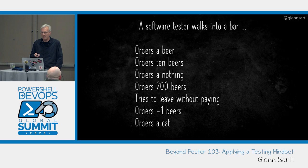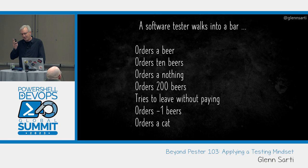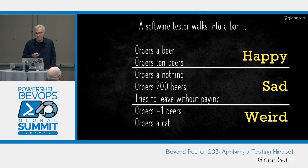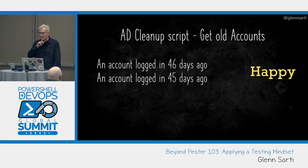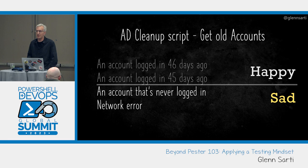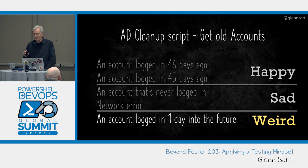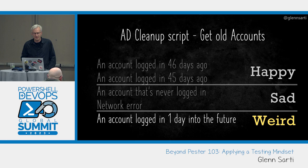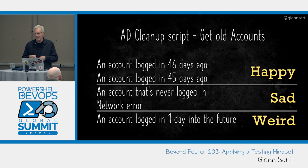Here's a joke going around on Reddit: a software tester walks into a bar, orders a beer, orders 10 beers, orders nothing, orders 200 beers, tries to leave without paying, orders negative one beers, tries to order a cat. But you can apply those three categories to that list — your happy tests at the top, your sad tests in the middle, and your weird shit at the bottom. For a more realistic example: remember the getOldAccounts function — we need to find accounts logged in more than 45 days ago. We'd have two happy path tests for 45 and 46 days old. Then we consider what if something goes wrong: what if the account's never logged in, or there's a network error when contacting AD? And then the weird things — what if an account was logged in in the future? As someone who lives in a future time zone, this is not as weird as you first think.